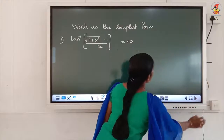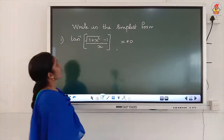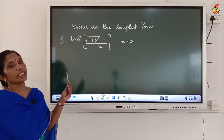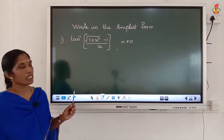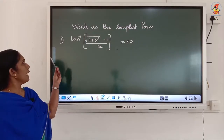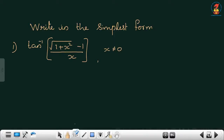Next type of questions: write in the simplest form. The expression is tan inverse of root of (1 plus x squared) minus 1, divided by x, where x is not equal to 0. If x is equal to 0, the denominator becomes 0, which means the expression is not defined. That is why the condition x not equal to 0 is given.